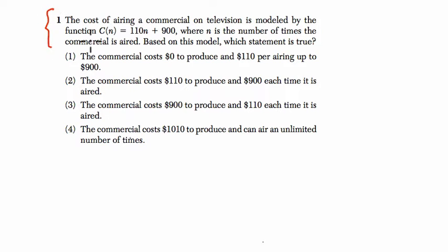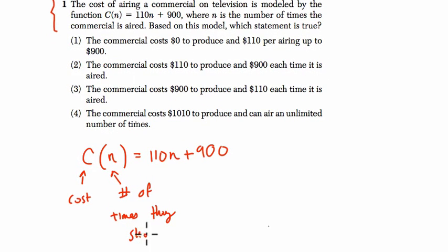The cost of airing a commercial on television is modeled by the function C(n) equals 110n plus 900, where n is the number of times a commercial is aired. That's the cost based on the number of times they show the commercial.